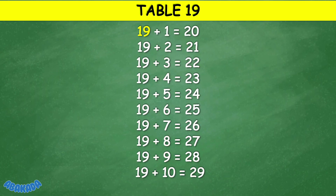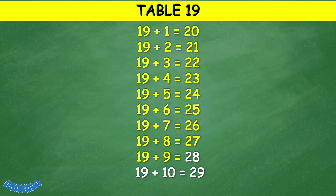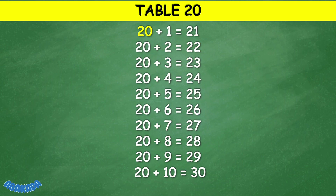Table 19: 19 plus 1 equals 20, 19 plus 2 equals 21, 19 plus 3 equals 22, 19 plus 4 equals 23, 19 plus 5 equals 24, 19 plus 6 equals 25, 19 plus 7 equals 26, 19 plus 8 equals 27, 19 plus 9 equals 28, 19 plus 10 equals 29.